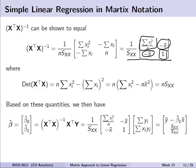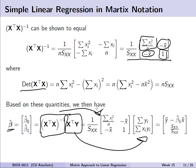Tying this together, we have beta-hat as the vector we're estimating. Plugging in our inverse and the X-transpose Y component, we get the same summary statistics derived algebraically. If we have that summary information — the mean of Y, the mean of X, and the sums of squares for XY and XX — we can get estimates for beta-naught hat and beta-1 hat. This extends generally to multiple linear regression with multiple predictors.